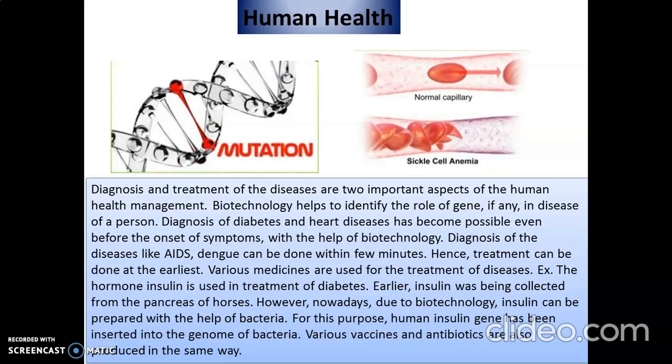Various medicines are used for the treatment of disease. For example, the hormone insulin is used in the treatment of diabetes. Earlier, insulin was collected from the pancreas of horses. However, nowadays due to biotechnology, insulin can be prepared with the help of bacteria in the laboratory. For this purpose, the human insulin gene has been inserted into the genome of bacteria. Various vaccines and antibodies are also produced in the same way.